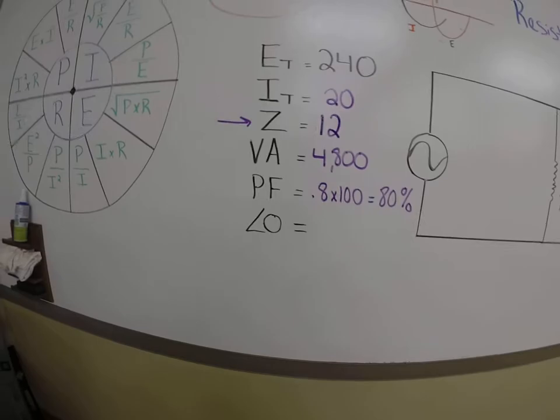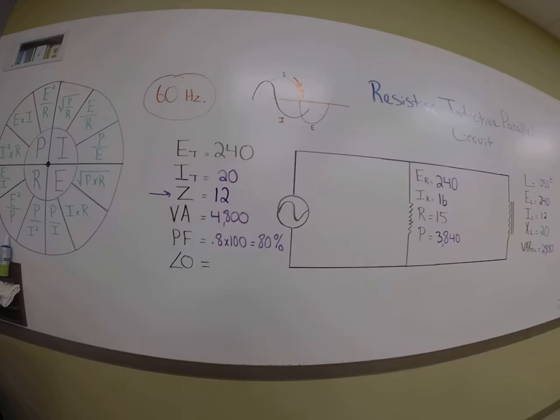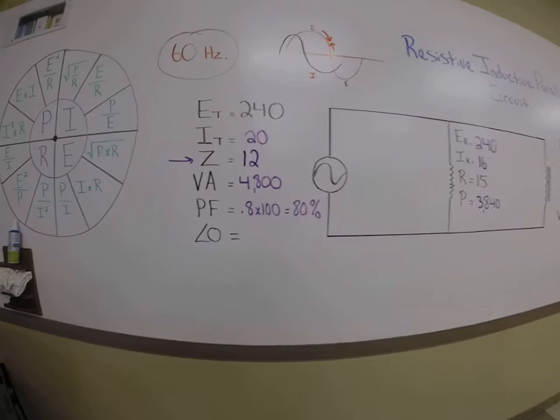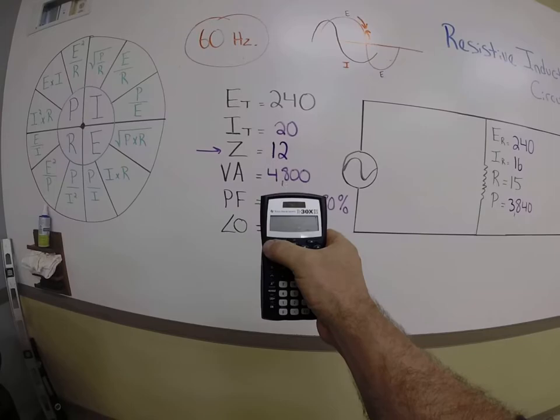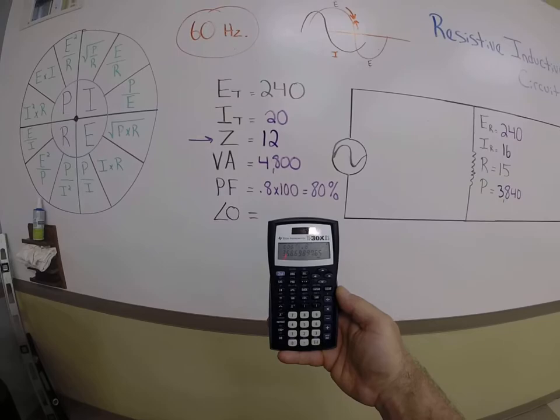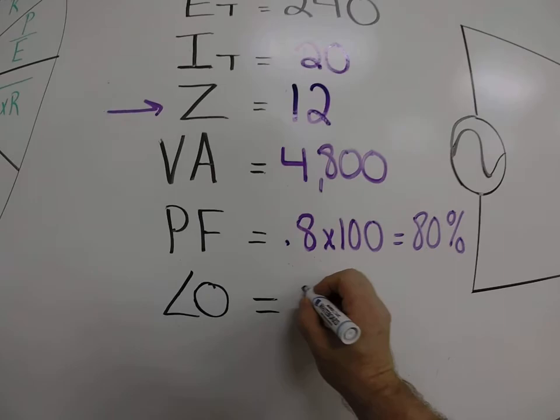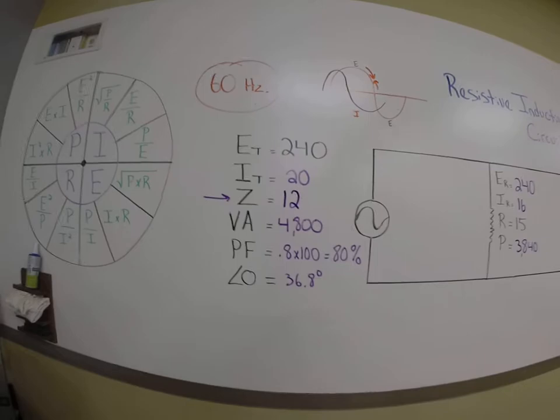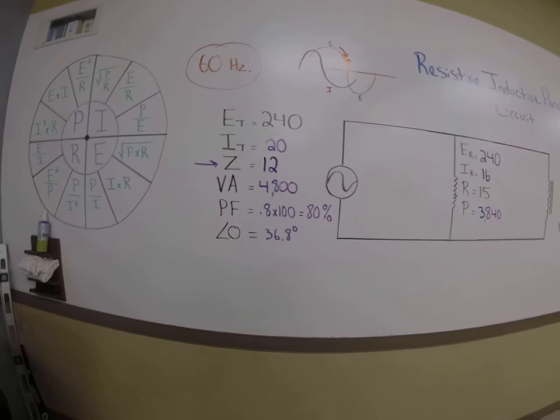Now, we're looking for the angle theta, which is the relationship of voltage and current in a resistive inductive parallel circuit. And what we've got to do now is take this decimal number and enter it in like this. Hit second function. Hit your cosine button. Put in 0.8. And you get 36.86 degrees. 36.8 degrees. That's the angle difference between voltage and current, or how out of phase they are with each other, is by 36, almost 37 degrees.